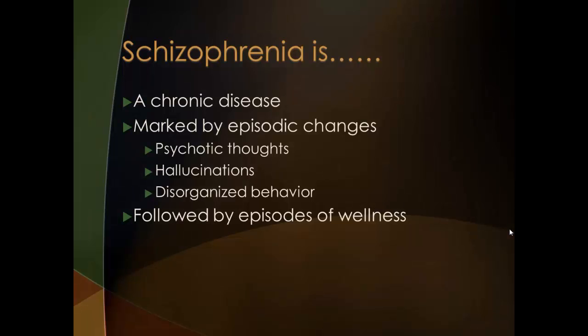A little bit about schizophrenia. It's a chronic disease, which means the symptoms are managed but the disease never goes away. It's marked by a slow onset, which can make it more difficult to diagnose. The disease has episodic changes, meaning that interspersed between periods of wellness, there are psychotic thoughts, hallucinations, and disorganized behavior.